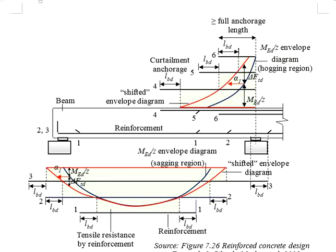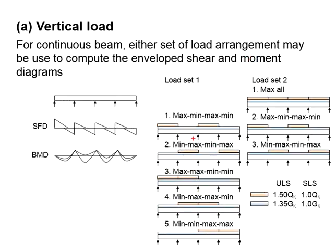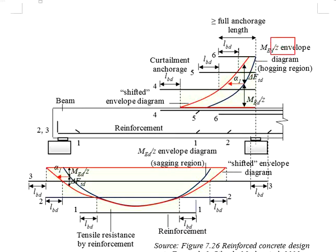Assuming a beam has a consistent cross-section throughout, z will be constant. This means the MEd/z diagram will follow the same pattern as the bending moment diagram. The MEd per z envelope diagram is obtained by analyzing a member based on a series of load cases, combining those to get the envelope bending moment diagram, and then dividing by z, producing the MEd per z envelope diagram as represented by this line.